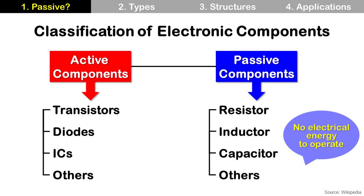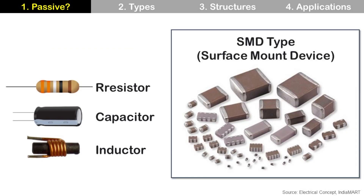A passive component is an electronic component which does not need any electrical energy to operate. There are many kinds of passive components, but today I will focus on resistors, capacitors, and inductors because those are very popular in SiP (system in package) and smartphone applications. Also, passive components have lots of different shapes, but SMD type is the most popular for smartphones because of its small size. So we will cover SMD type only.